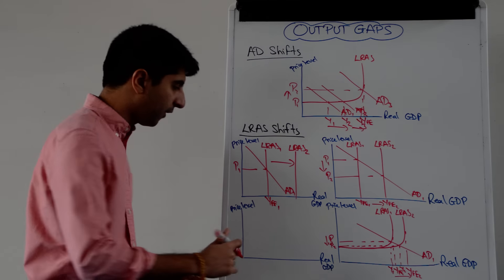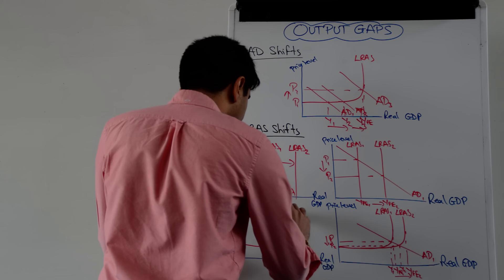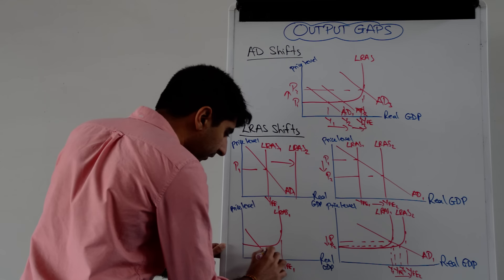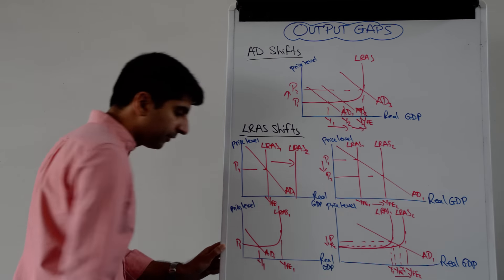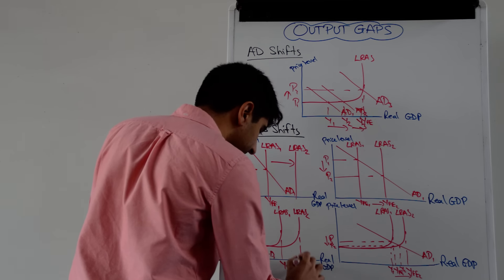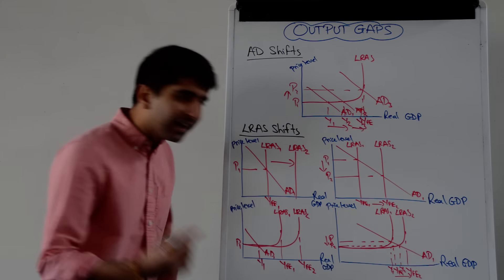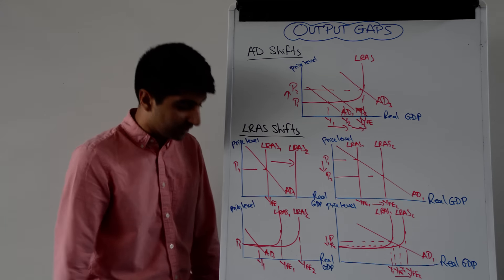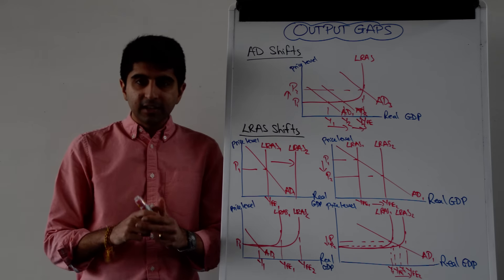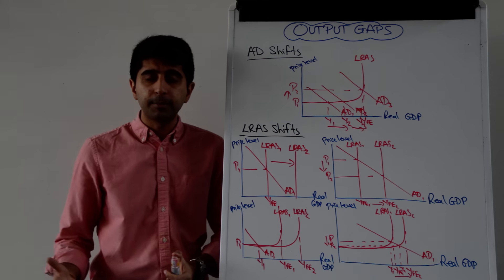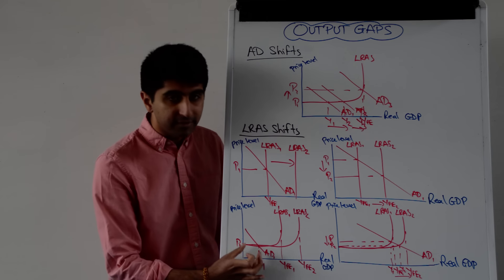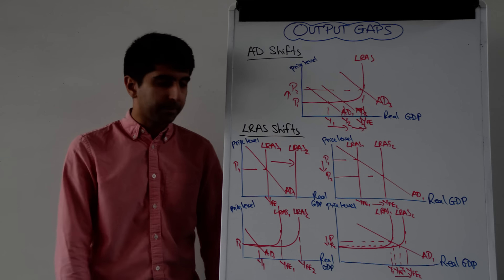We can show the same thing on a Keynesian LRAS diagram. If AD is way down with equilibrium at Y1 and price level P1, and LRAS shifts to LRAS2, there isn't enough aggregate demand to make any use of that shift — such a large negative output gap means the shift of LRAS is redundant. In this case, what is needed is not LRAS-shifting supply side policies, but demand side policies — Keynes would argue these are needed to get aggregate demand closer to the full employment level of output. Supply side policies when the economy is in deep recession with a huge negative output gap are going to be useless.